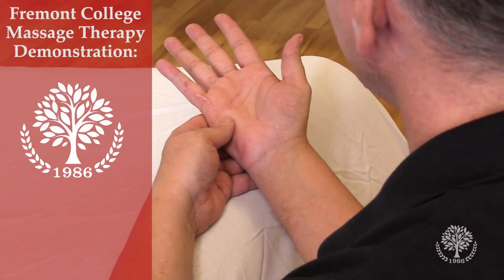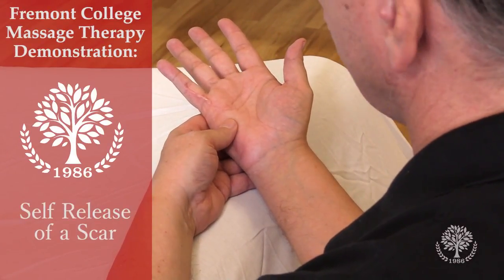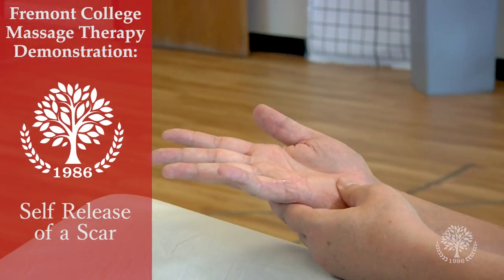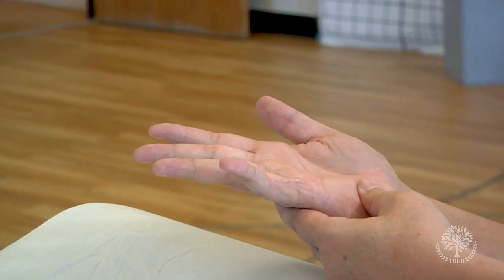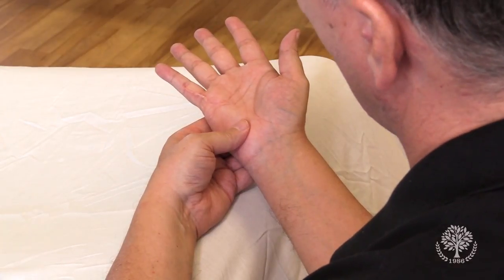Today we're going to do a demonstration of a self-release on a scar. This scar is due to having a partial palmar fascectomy for a condition called Dupuytren's contracture.